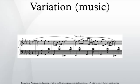Two famous variation sets from the Baroque era, both originally written for harpsichord, are George Frideric Handel's The Harmonious Blacksmith Set and Johann Sebastian Bach's Goldberg Variations.